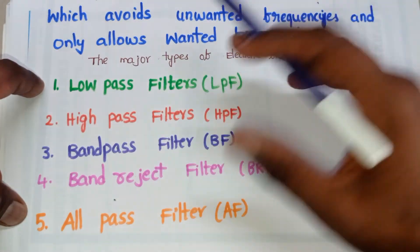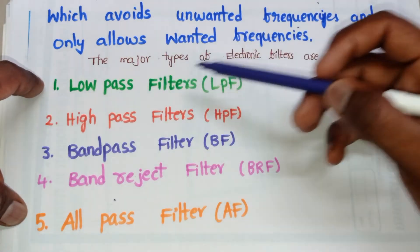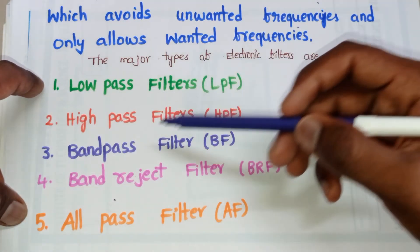The last one is all pass filter, AF. Consider these five types: first one is low pass filter, second one is high pass filter, band pass filter, band reject filter, all pass filter.